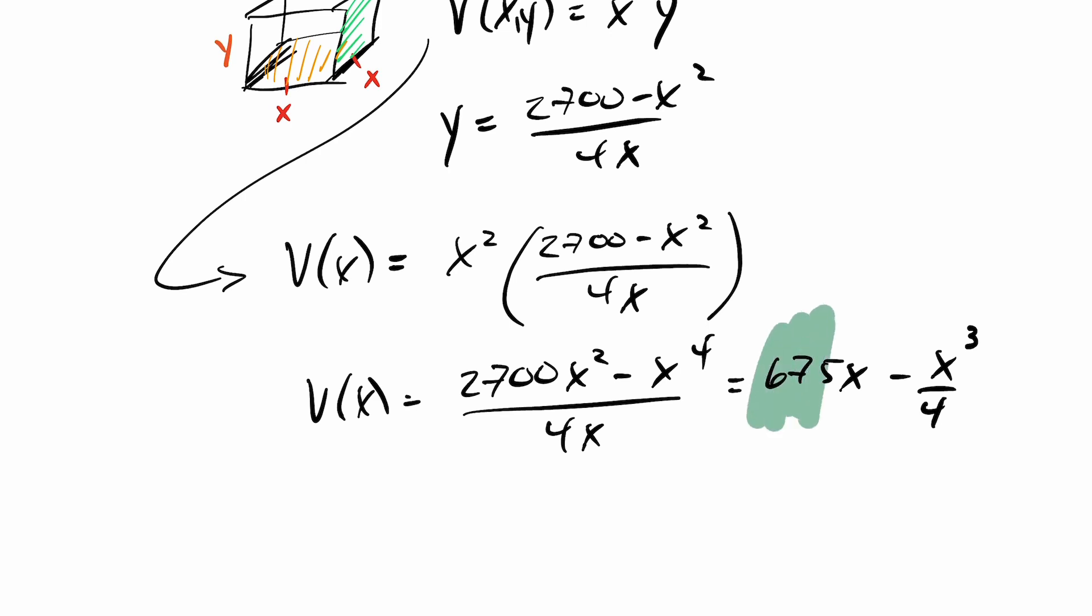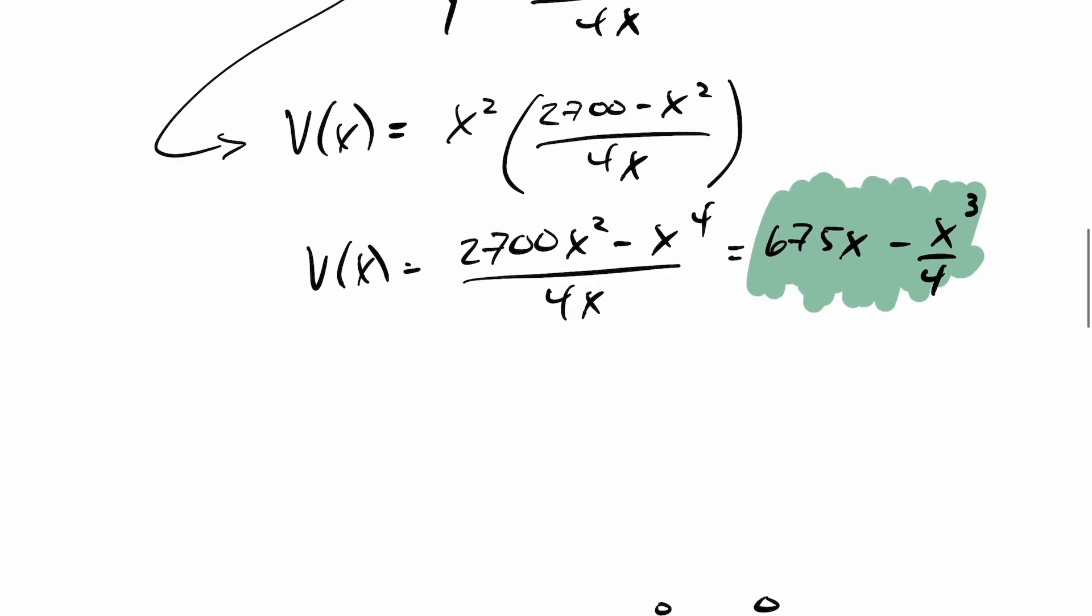So now I have a representation for V at X here. So I want to go ahead and take my derivative. So finding my V prime at X here, I end up getting V prime at X is 675 minus 3X squared over 4. And again, I want to find my critical points here. So I'm going to go ahead and simplify this up. So this is going to end up being 675 times 4, which is 2,700 minus 3X squared over 4. I'm going to go ahead and set this equal to 0 and solve.